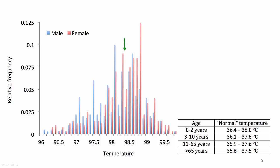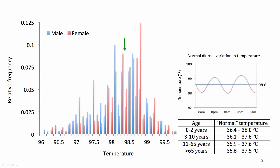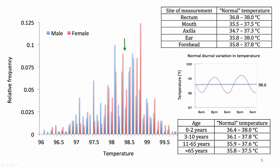Normal temperature also varies by age, with average temperatures tending to be higher in the young and lower in the elderly. In addition, temperature varies over the course of the day — temperatures tend to be higher in the evening and lower in the morning, in part due to the fluctuation in the release of serum cortisol by the adrenal glands. When evaluating temperature, the measurement method should be kept under consideration, as recorded temperature can vary by location in the body. The most accurate measurements are usually from the body's core, such as rectal or bladder temperatures, more commonly performed in an ICU setting. In most clinical practice, recordings from the mouth or the ear are typically used.